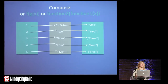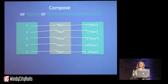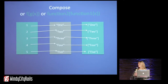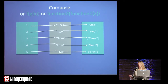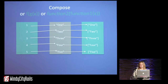Compose is a function that's built into a lot of languages — it's not built into Ruby. But when people say "compose," they mean f of g of x. F is a function, g is a function, x is your parameter. So if I can apply f to g to x, I have function composition.